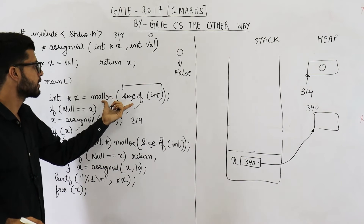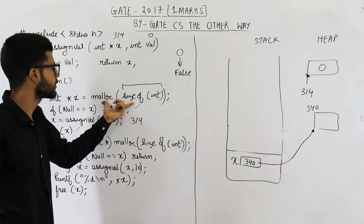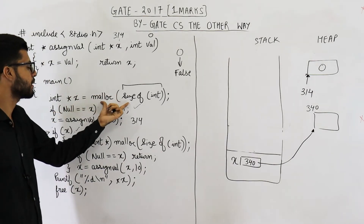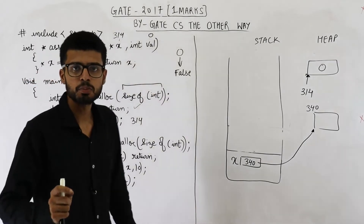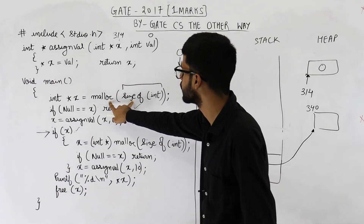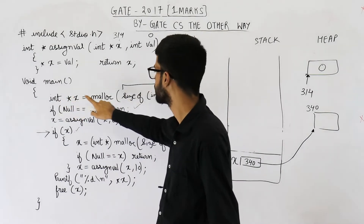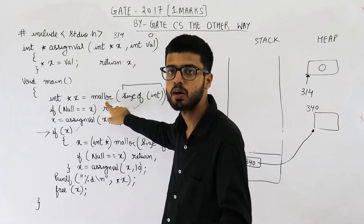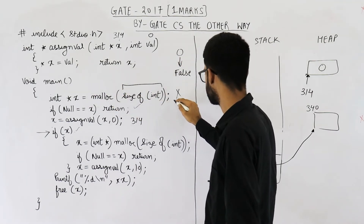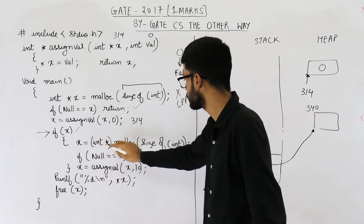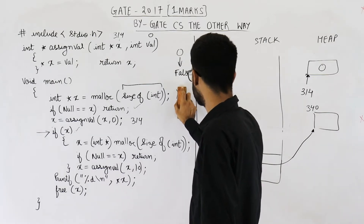Note that we are not typecasting the address here, but in C language this is fine — you can directly assign the address returned by malloc to any pointer variable. However, in C++, you must always typecast the return address of malloc. So this line without a typecast would give a compiler error in C++, but both forms are accepted in C language.